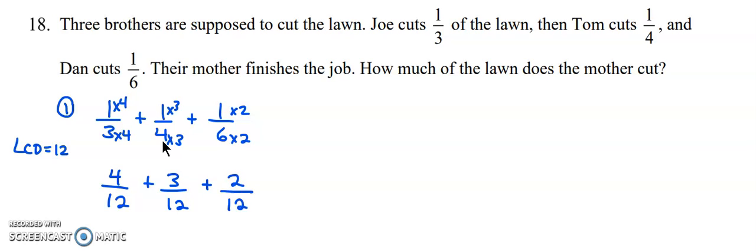Now the adding is easy. We're going to keep our denominator the same. Four plus three is seven, plus two more is nine. So the boys have done nine twelfths.